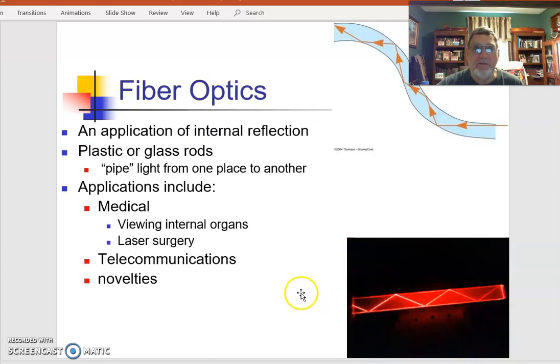We have a lot of applications of total internal reflection nowadays. So much of you know, you're watching this on an internet connection - that signal at some point has gone over some fiber optics, which is much faster than the old type of transmitting.